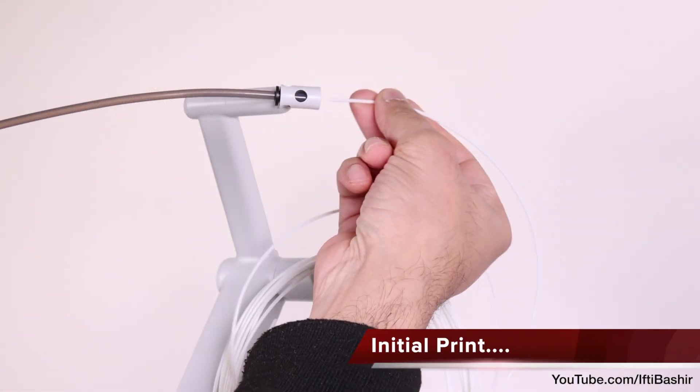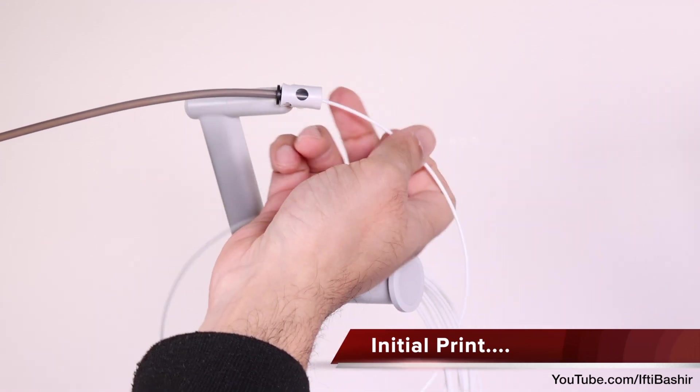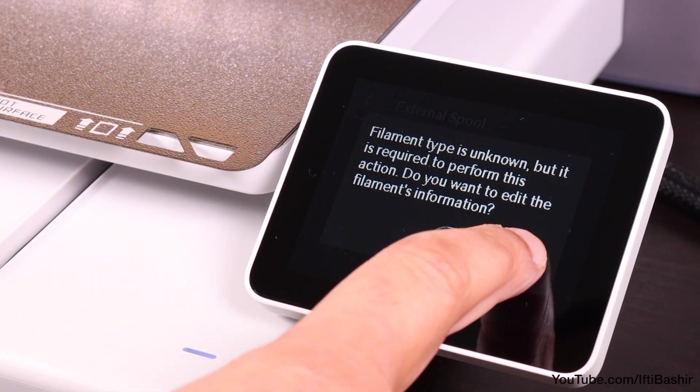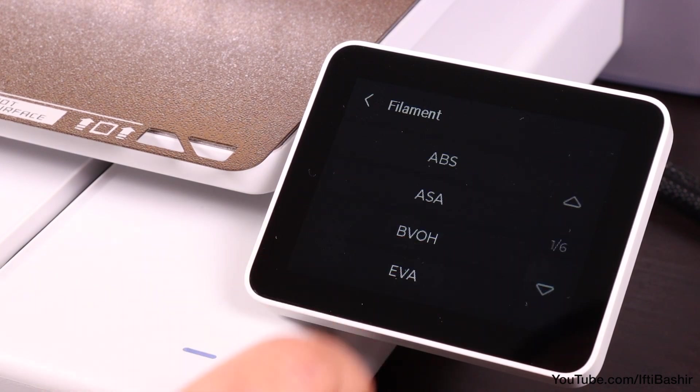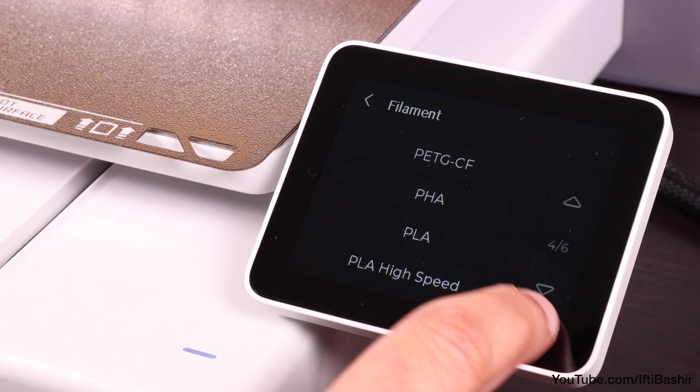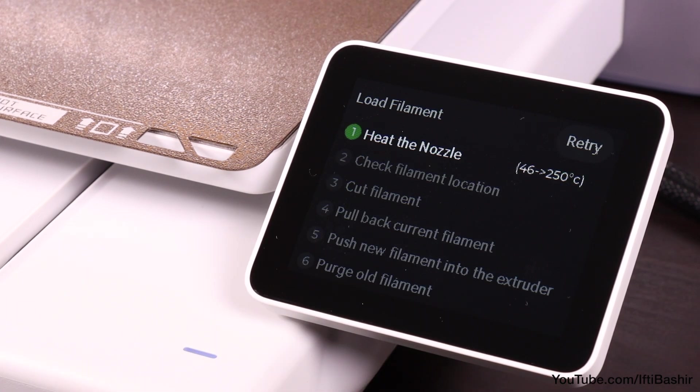At this point, we can proceed to load the sample filament that's included with the printer. Selecting the appropriate option within the settings, and manually setting its type and color within the clearly laid out menu system. Before following instructions while it purges the filament through.